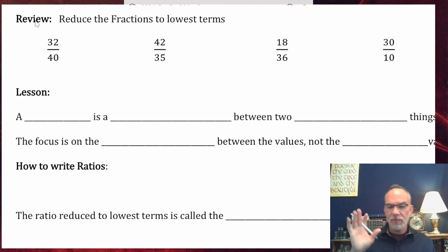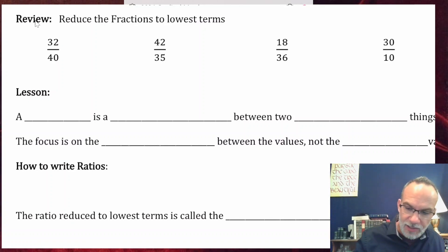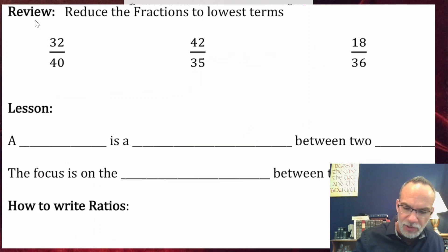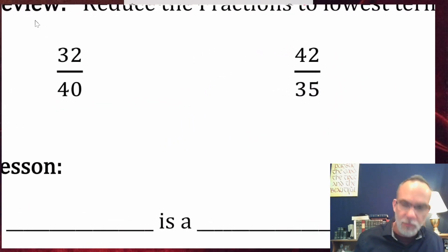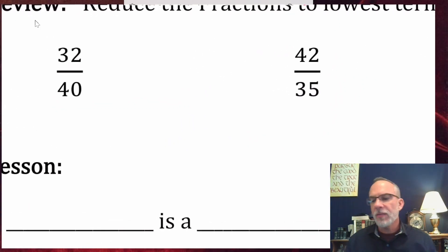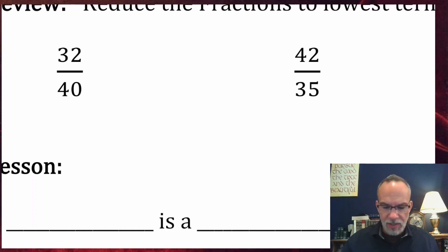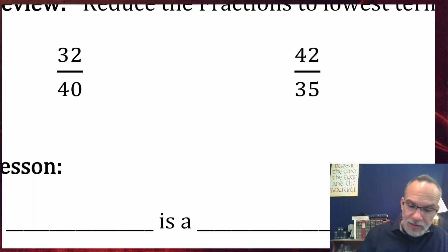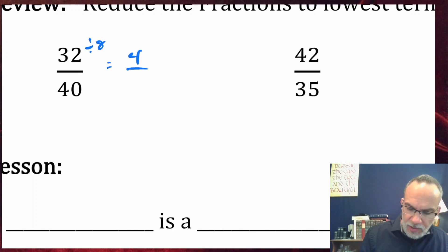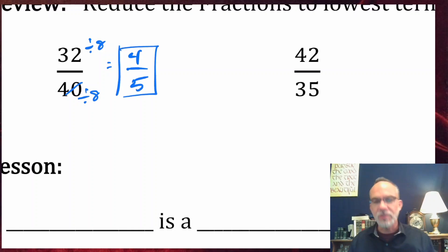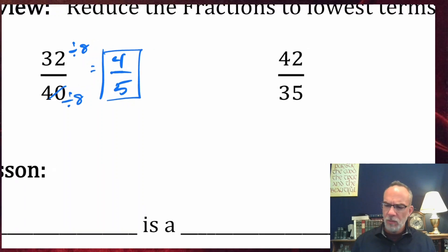For review, let's do a couple of reducing fractions. So 32 over 40 — what number can you divide the top and the bottom by? That would be 8. So 32 divided by 8 is 4, and 40 divided by 8 is 5. There's your reduced fraction in lowest terms — that's kind of the fourth grade method.